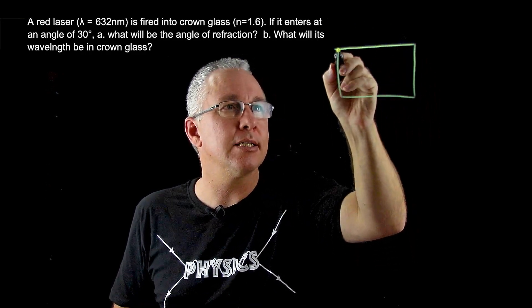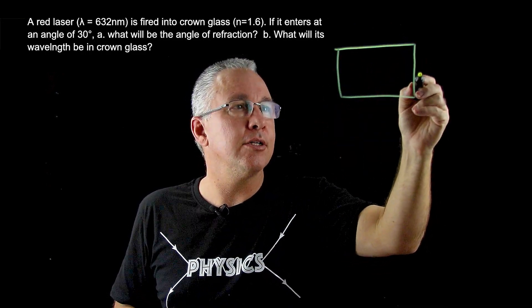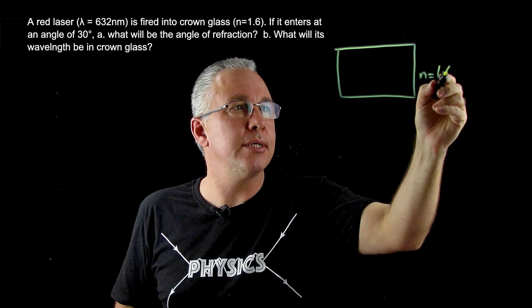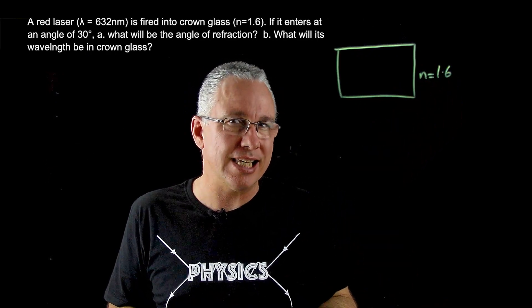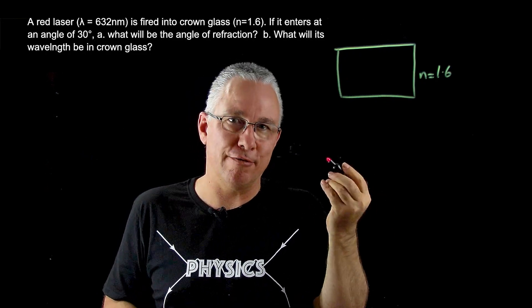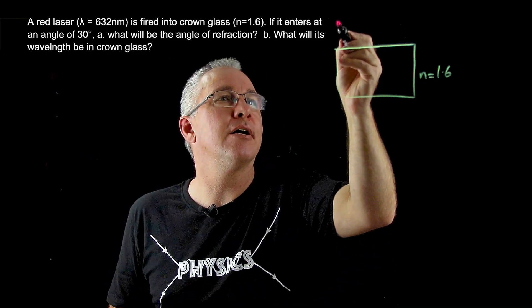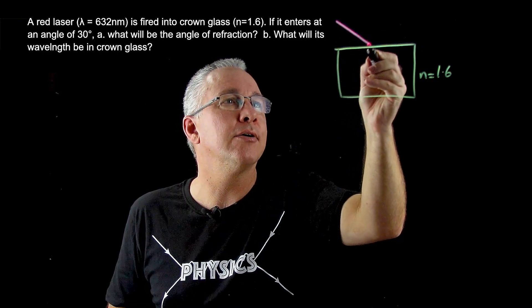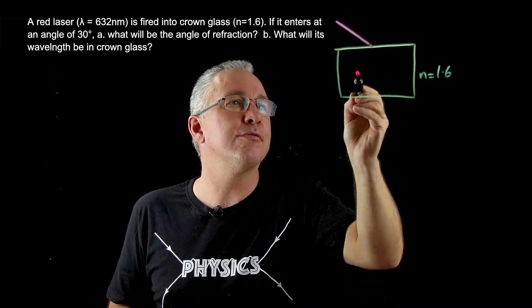So I'm going to draw my crown glass like so, and I'm going to label that n is equal to 1.6. It's a value, it doesn't have a unit. Then I have a red laser, and I only have a pink pen. So we're going to fire this off at an angle like so, and we know that it refracts.